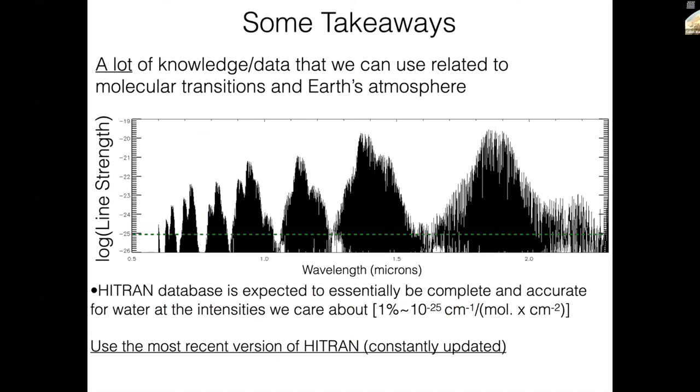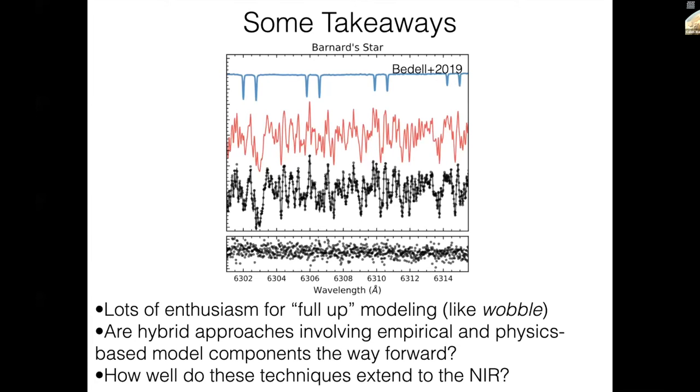Some takeaways for me thinking about this topic over the years is that there's a lot of knowledge and data that we can use related to both Earth's atmosphere as well as molecular transitions. The HITRAN database at the line strengths that we care about is essentially complete and accurate. So this idea that we don't have sufficient molecular transition information to address this problem is not really right, but it's important to use the most recent version of HITRAN. It's constantly being updated and folks who are involved in HITRAN are always working hard on it and in my experience are very happy to talk to us about these issues.